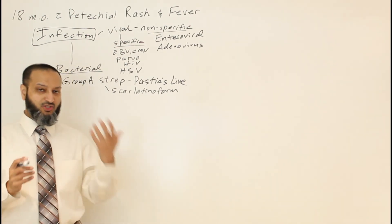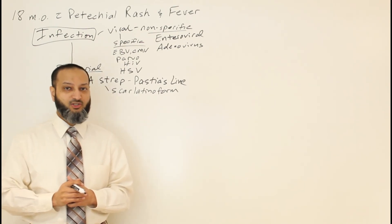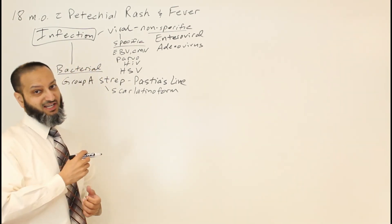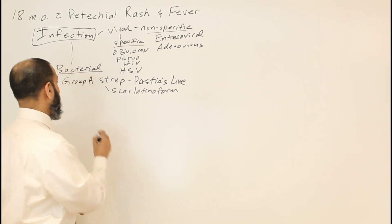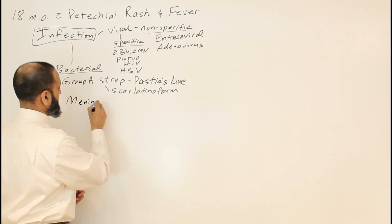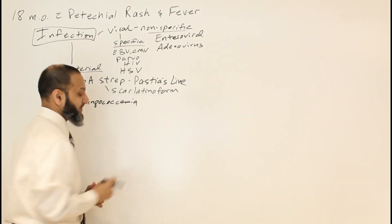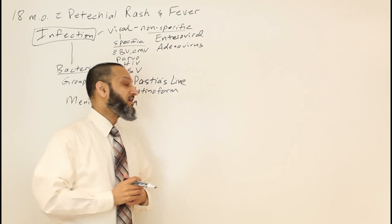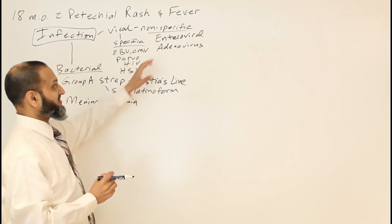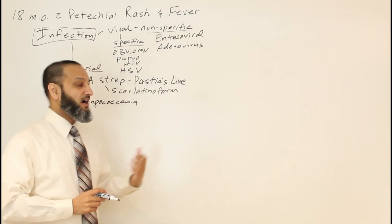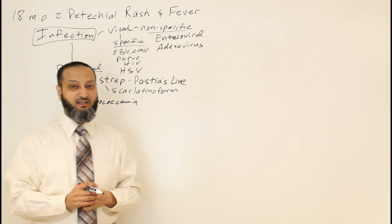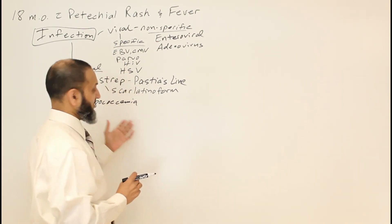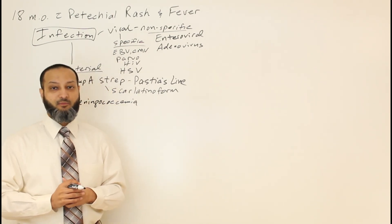A major consideration in a child coming in with petechial rash and fever is meningococcemia. It can present with petechial rash and fever, and is a very important consideration — Neisseria meningitidis causing sepsis and meningitis can obviously have a very bad outcome. Most likely a child has something simple like enterovirus, but meningococcemia must be considered. We do have conjugated vaccines for it now, so it's less common, but still important.